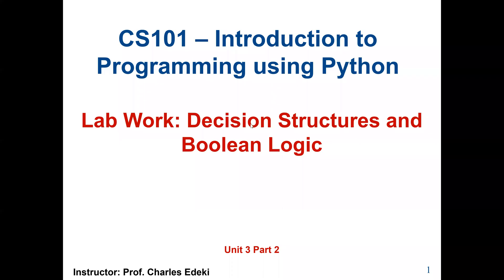Welcome to CS101, Introduction to Programming using Python. This lab work covers Chapter 3 of our course book, which is Decision Structures and Boolean Logic. In these problems, we are going to solve two problems using relational operators and also logical operators. This is Unit 3, Part 2, lab work.